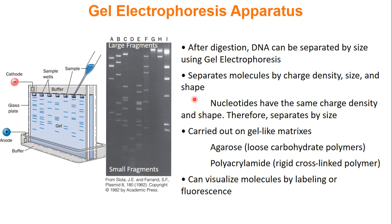Electrophoresis normally separates molecules by three things: overall charge density, size, and shape. Luckily for us, DNA — no matter what the size — has the same charge density and the same shape. So the only thing different between fragments is size, meaning gel electrophoresis separates DNA by size only. Smaller fragments travel further down the gel than larger fragments because the gel medium has holes — smaller molecules slip through more easily, while large DNA get caught up and don't travel as far.